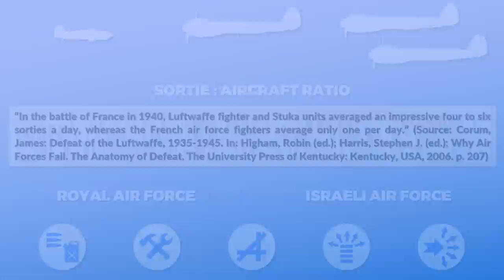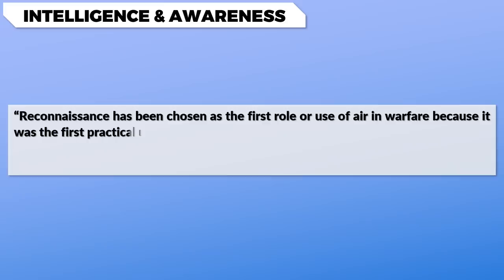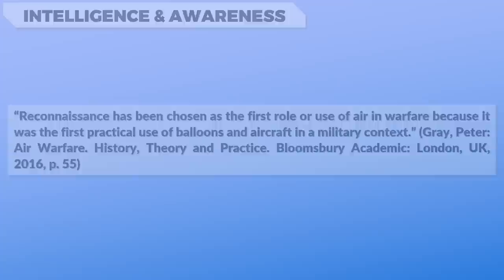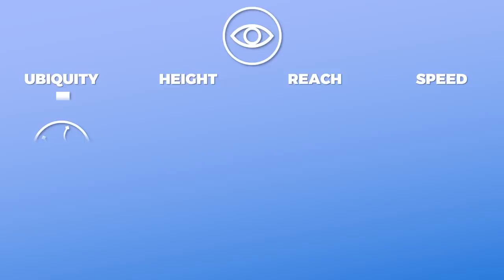The second role is intelligence and situational awareness. Reconnaissance was chosen as the first practical use of balloons and aircraft in a military context. The recon and surveillance capabilities of air power are in direct relation to the four unique qualities of air power: ubiquity, height, reach, and speed. Ubiquity is the fact that airplanes possess freedom of action and can fly straight to their destination. Height or altitude allows for observation and protection.